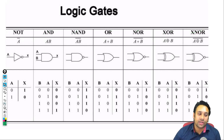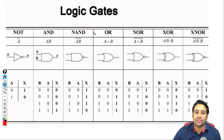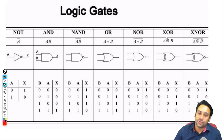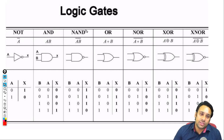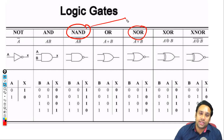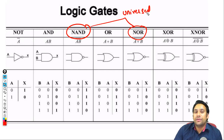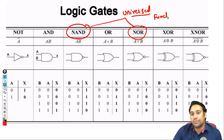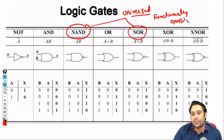हम सभी logic gates को काफी in-depth में study कर चुके हैं. इनमें से कुछ ऐसे logic gates हैं जैसे NAND और NOR — यह जो दोनों logic gates हैं वो universal हैं, या फिर कहो कि both of these two logic gates are functionally complete.